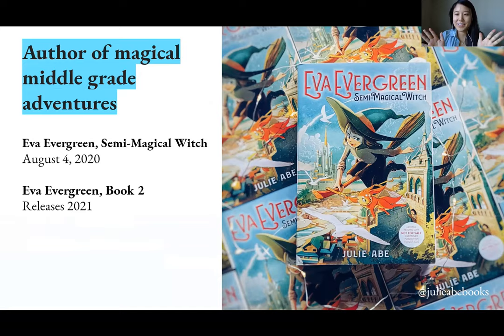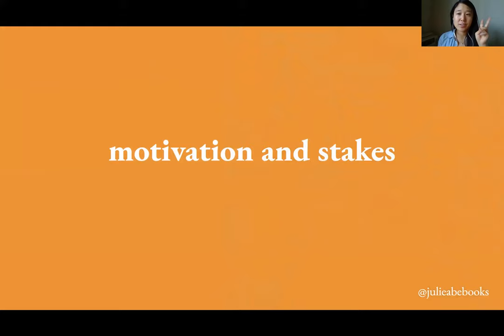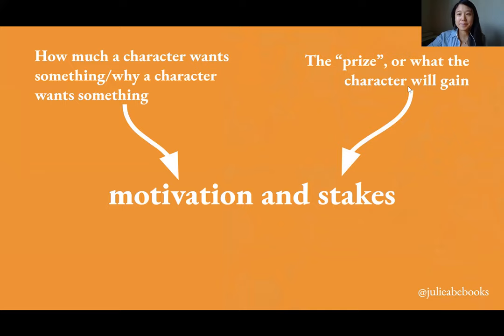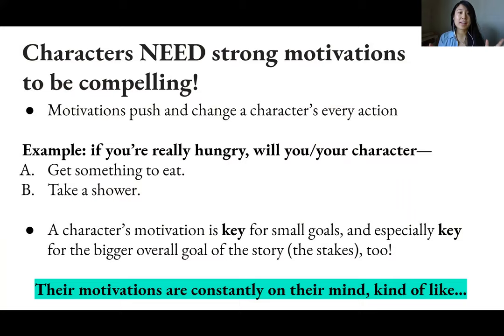So: motivation and stakes. These are two things that are key for creating compelling characters. Motivation is how much a character wants something and why they want it. Stakes is the prize — what the character will gain. Characters need strong motivations to be compelling, and motivations push and change a character's every action throughout the story. It needs to be present in every single scene and every interaction, even internally.